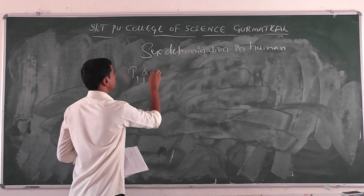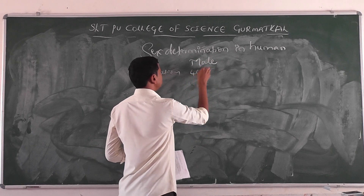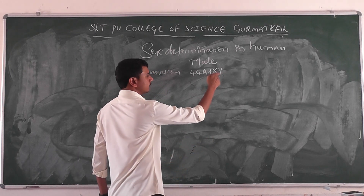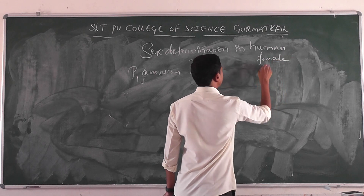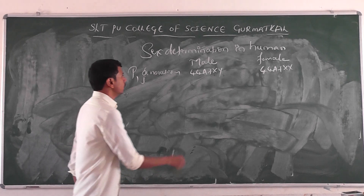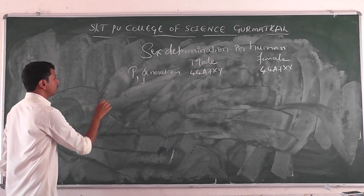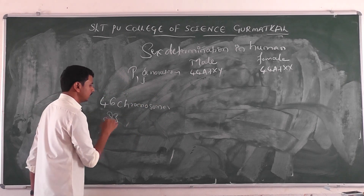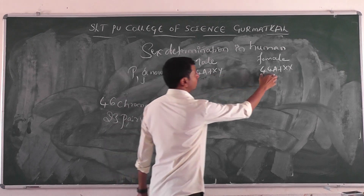At the parent generation level, the male contains 44 chromosomes plus two sex chromosomes, X and Y — two dissimilar gametes. Same in the case of the female: 44 chromosomes along with two sex chromosomes. So totally in human beings, 46 chromosomes are present, or if we consider pairs, that will be 23 pairs of chromosomes.